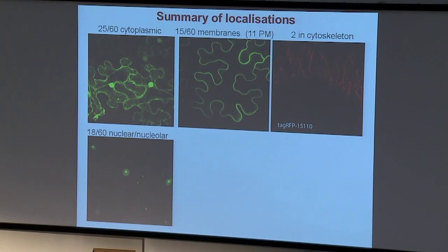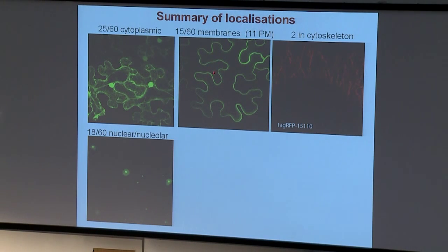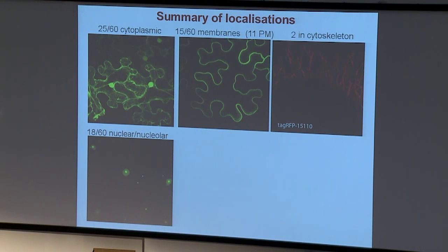Our effectors fused to GFP or RFP have been expressed inside plant cells to see where they go. Nearly half of them are generally cytoplasmic — they're stable on westerns. Some of them are membrane associated, and in the majority of those cases they're associated with the plasma membrane. Around about a quarter are localized in the nucleus. And one or two are associated with the cytoskeleton, in this case microtubules. So they're going to different locations within the plant cell.